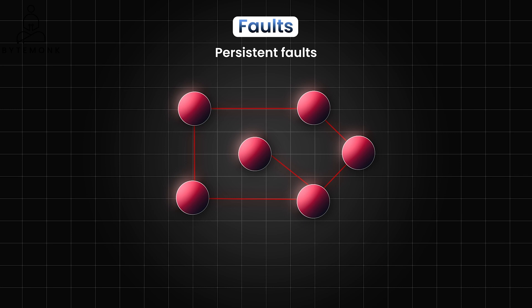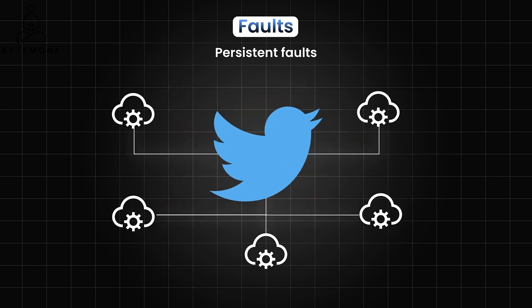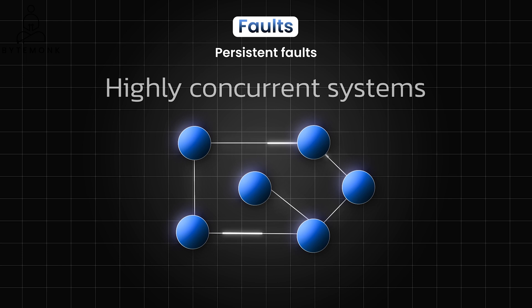For example, a social media platform like Twitter relies on multiple backend services. If the service responsible for posting tweets goes offline completely, retrying failed tweet submissions indefinitely would be pointless. Instead, the application should quickly recognize the issue and inform the user that their tweet couldn't be posted at this time. In highly concurrent systems where multiple operations are happening simultaneously, failing quickly is often the best strategy. This prevents a single point of failure from causing a chain reaction, ultimately safeguarding system stability.